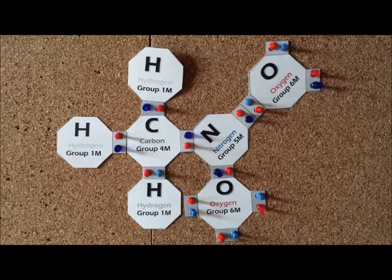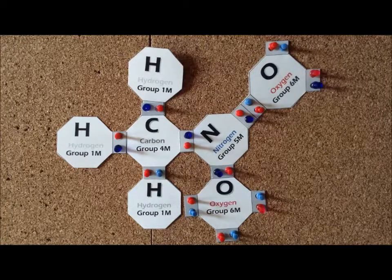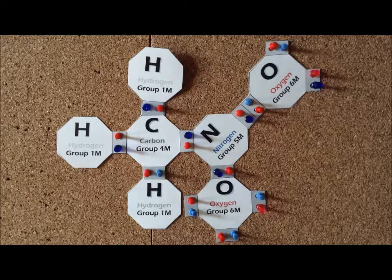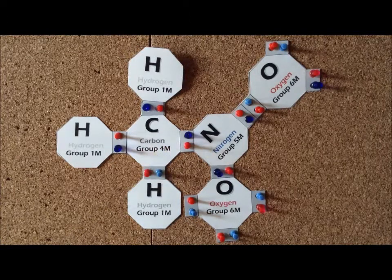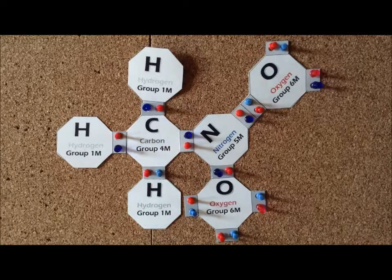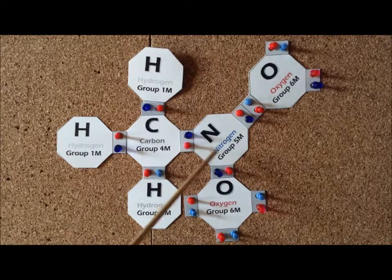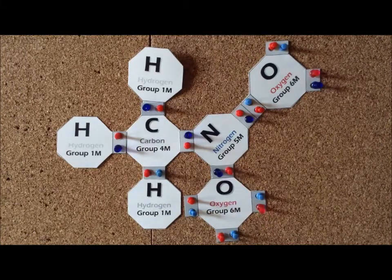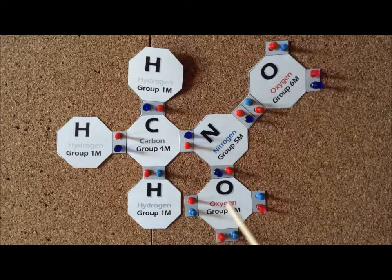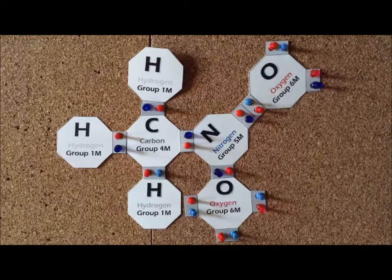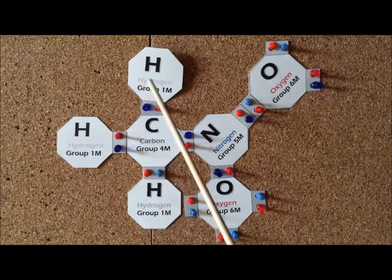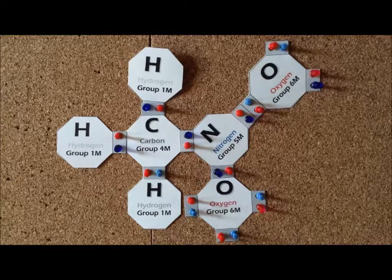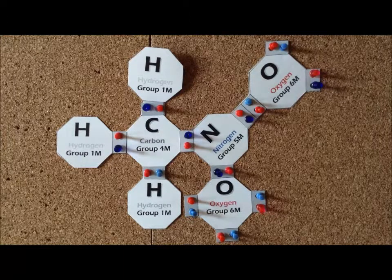Our next compound is called nitromethane. It's an analog of methane where we replace one of the hydrogens with a nitro group. For this compound, each carbon contributes 4 valence electrons. The nitrogen contributes 5, the 2 oxygens each contribute 6, and each of the hydrogens contributes 1. Therefore, for the entire compound, we have a total of 24 electrons.